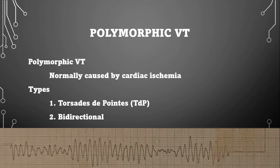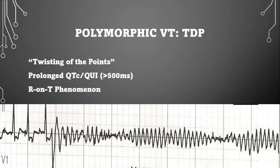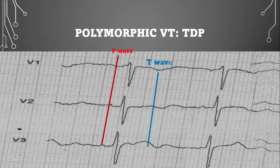There are two types of polymorphic VTAC we'll discuss: torsades de pointes and bidirectional. Torsades de pointes — French for 'twisting of the points' — looks nearly identical to polymorphic VTAC, but to call something torsades, you need a 12-lead before or after conversion showing a prolonged QTc of over 500 milliseconds. This ECG shows the R-on-T phenomenon. If you see ectopy between QRS complexes with a prolonged QT, start getting worried. This phenomenon can also occur with a prolonged QU interval — you can see a prominent U-wave here in a patient with severe hypokalemia.